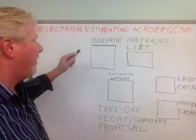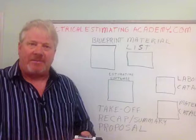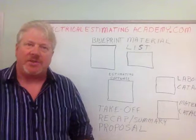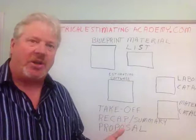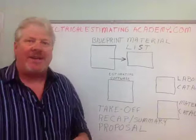Electrical estimating starts out with a blueprint or a drawing. Now if you're doing a small project, you might not have a drawing. What I always do if I'm estimating a small project that doesn't have a drawing — sometimes I go to the site and take lots of pictures, or I just create a sketch myself. So assuming you have a drawing or a set of blueprints, what you do is you take a material list and write it down. We call it a material takeoff — you write down an exact material list of the stuff that has to be installed.